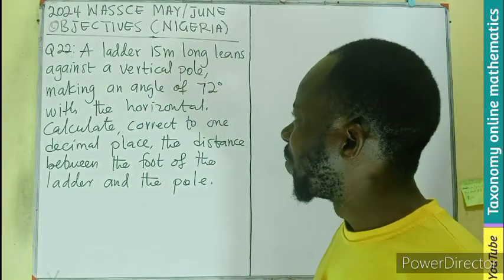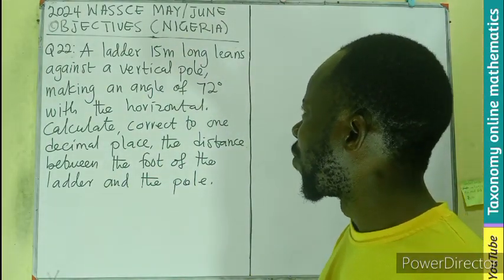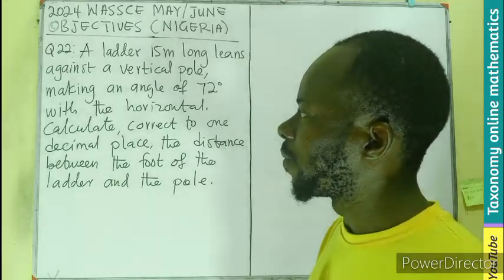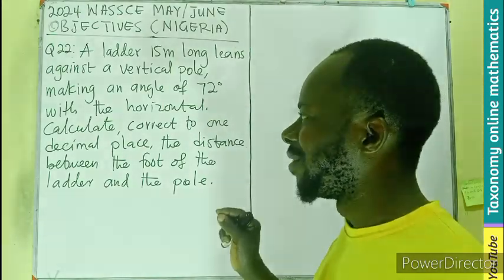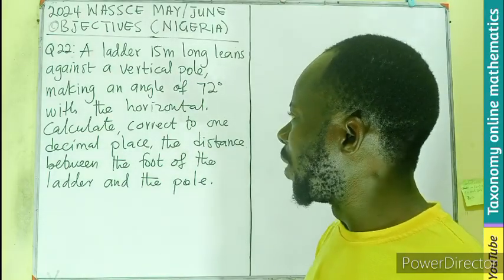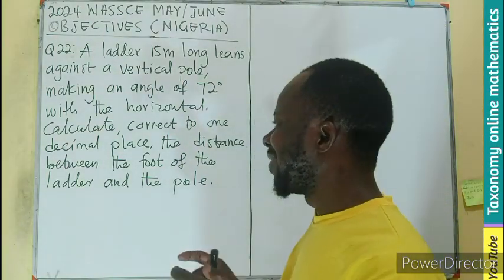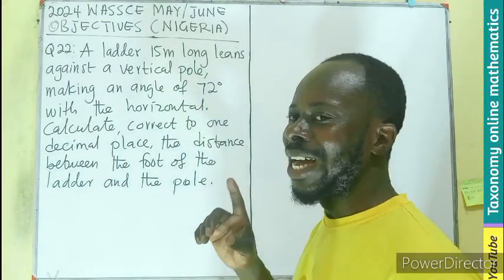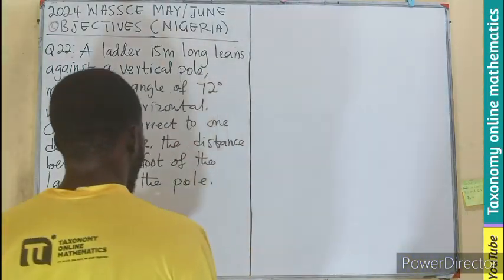A ladder which is 15 meters long leans against a vertical pole, making an angle of 72 degrees with the horizontal. We have to calculate, correct to one decimal place, the distance between the foot of the ladder and that of the pole. First of all, we need to make a sketch.